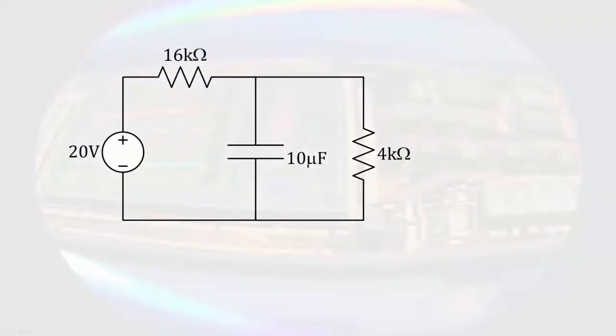What about a slightly more complicated circuit? Let's look at a circuit with the same DC source and capacitor, but this time we have a couple of resistors with them.